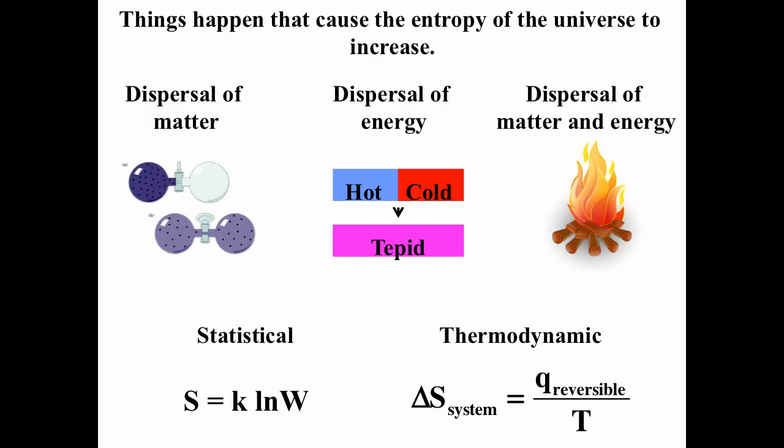In summary: things that cause entropy of the universe to increase include dispersal of matter, dispersal of energy, or both. Statistically, S = k·ln(W) measures the number of configurations. Thermodynamically, ΔS_system = q/T is the key equation for calculating entropy change without chemical reactions; with chemical reactions, use products minus reactants. ΔS_surroundings = −ΔH/T, since only heat affects the surroundings' entropy.